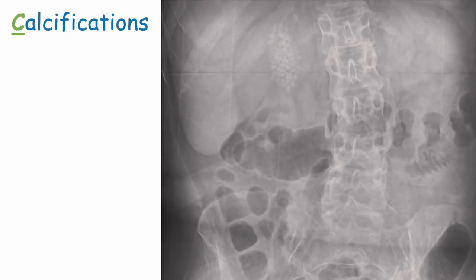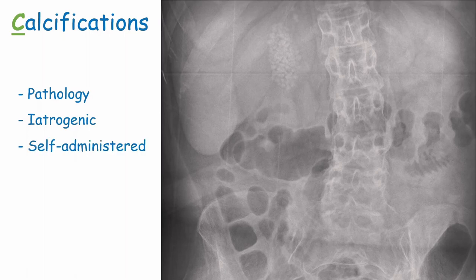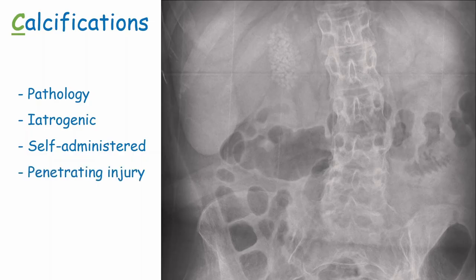C is for Calcifications - we're looking for anything white. This can be a result of pathology, such as stones. It can be iatrogenic, either purposefully inside the patient like a vascular stent, or accidentally, like a piece of surgical equipment left behind after an operation. It could be something the patient self-administered orally or rectally, or from penetrating injuries such as shrapnel from road traffic accidents.